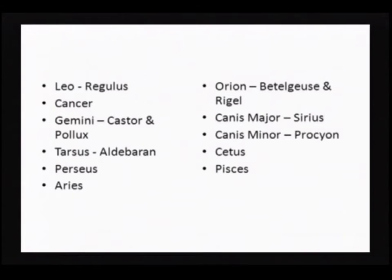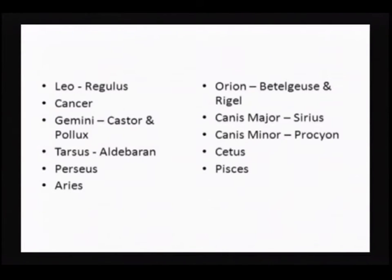Orion has Betelgeuse — which is what most people call it in common tongue — and Rigel. If you're a hunter like Orion, you certainly need your two faithful dogs, so that's Canis Major and Canis Minor. Canis Major has the bright star Sirius, one of the brightest stars in the sky. Canis Minor has the star Procyon. Then we have Cetus and Pisces.